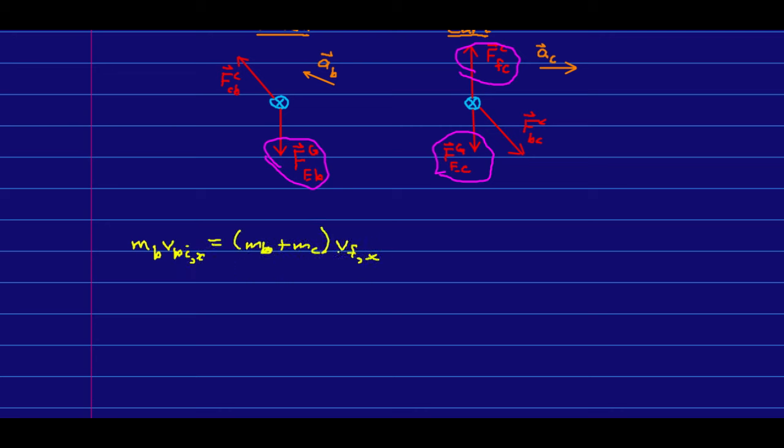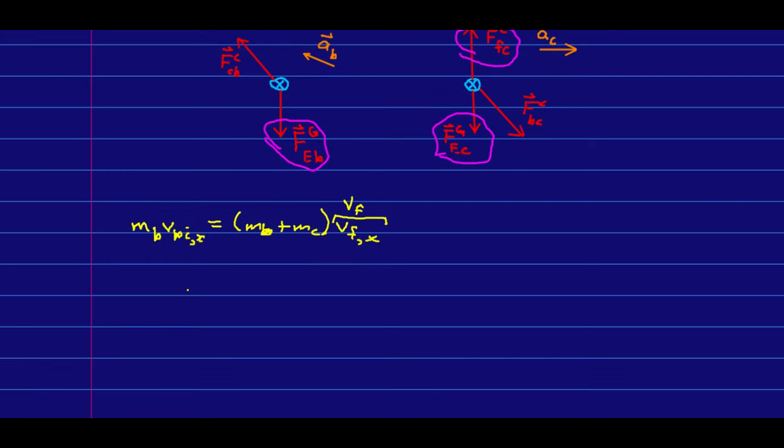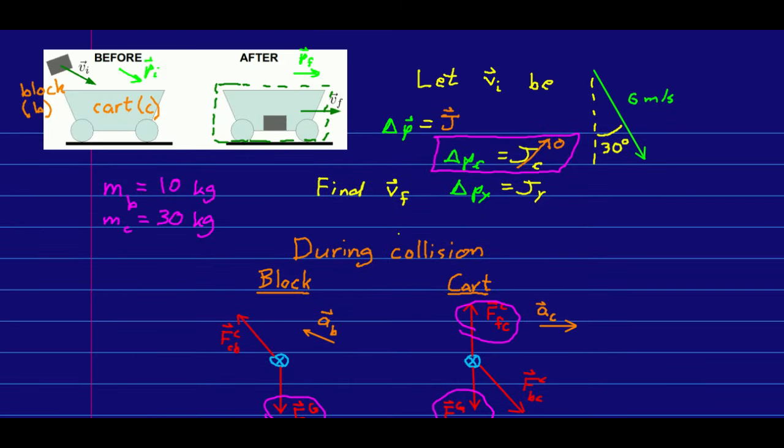Like so. Where note that this, because we know the cart is going straight to the right, this is just VF. And so we're virtually done. We can find what we want just by solving this. Because the only remaining thing to do is that this, VBI,X, is the x component of the initial velocity of the cart.